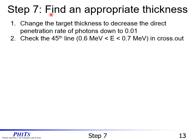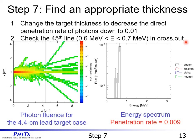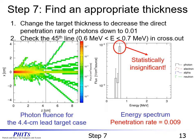Let's go on to Step 7: find an appropriate thickness. Please change the target thickness to decrease the direct penetration rate of photons down to 0.01. In this exercise, please check the 45th line from 0.6 MeV to 0.7 MeV in cross.out. In the case of a 4.4 centimeter lead target, photon fluence is shown in this figure. The right figure shows calculated results of the energy spectrum of penetrated photons. From cross.out, we find the penetration rate is 0.009, which is less than 0.01. However, the error bar exceeds 0.01, so we cannot judge this as statistically significant.